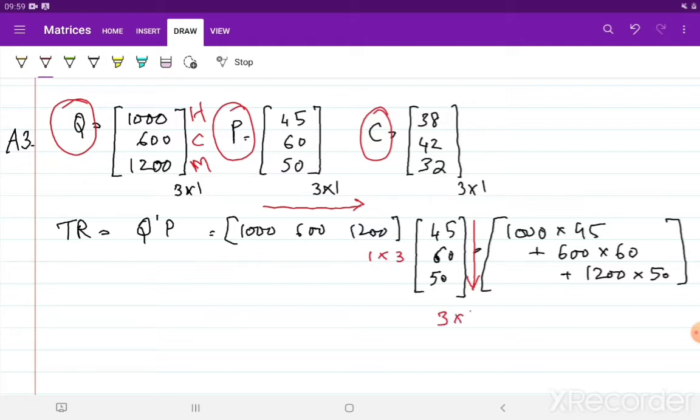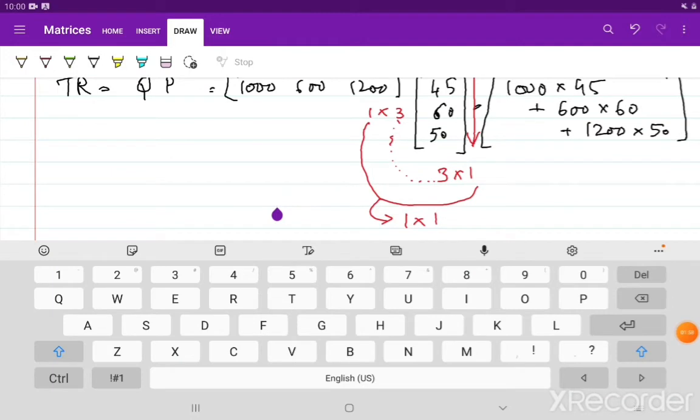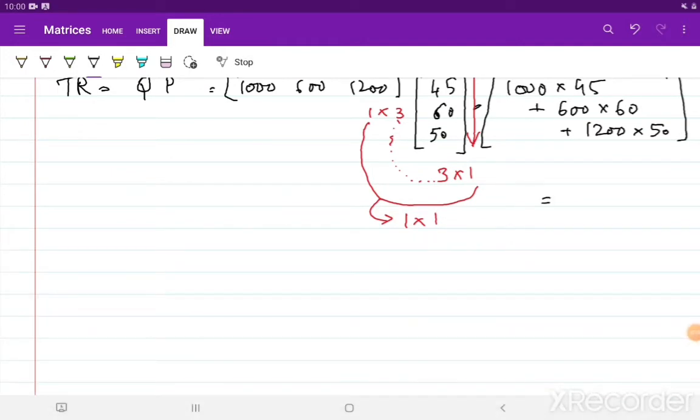So remember that my Q dash has now become a 1 cross 3 matrix. My price is a 3 cross 1 matrix and they are conformable. By conformable, I mean they both can be multiplied because the number of columns in the first matrix is equal to the number of rows in the second matrix. And the resulting matrix will be a 1 cross 1 which is what we want to represent our total revenue. So my resulting total revenue is 141,000.